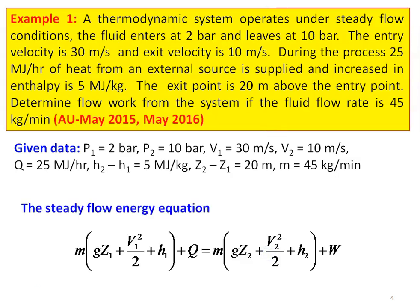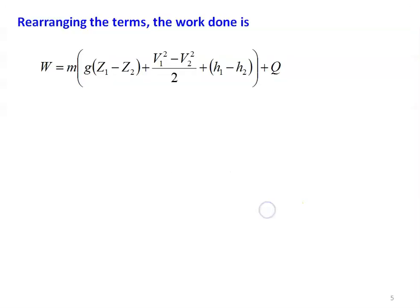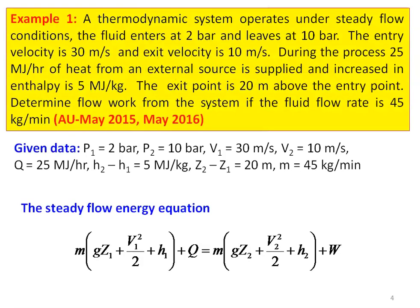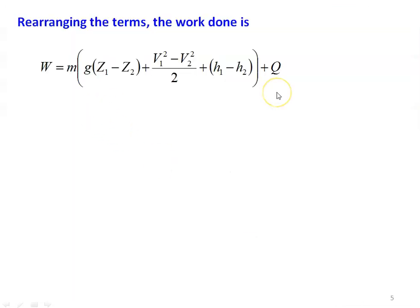Writing the general form of the steady flow energy equation, then rearranging to calculate work done. W = M·[(g(Z₁ − Z₂) + (V₁² − V₂²)/2 + (H₁ − H₂)] + Q. We keep W on one side and move all other terms to the left.